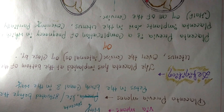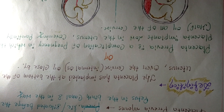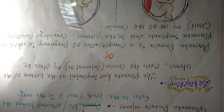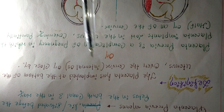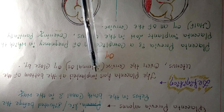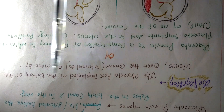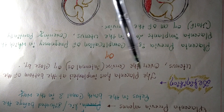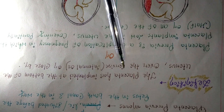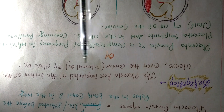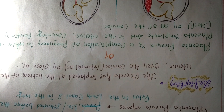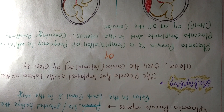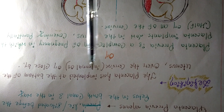The definition of placenta previa is: the placenta has implanted at the bottom of the uterus, over the cervix or close to the cervix. This condition is called placenta previa.